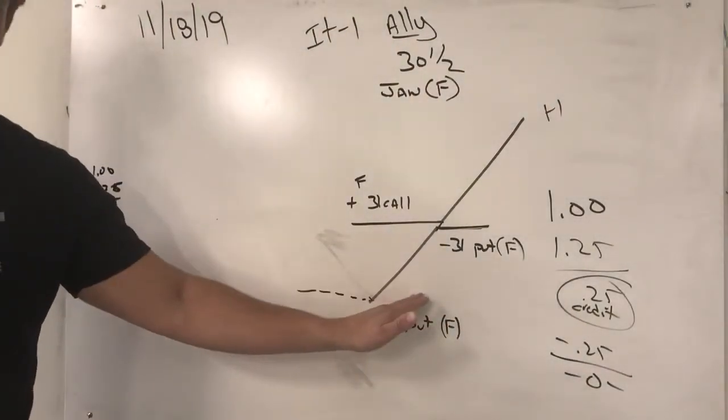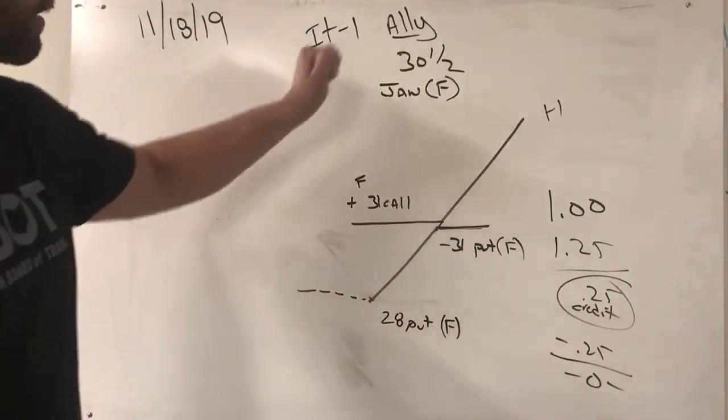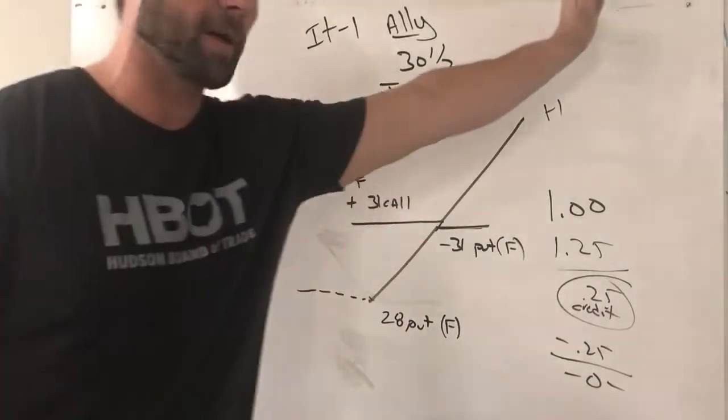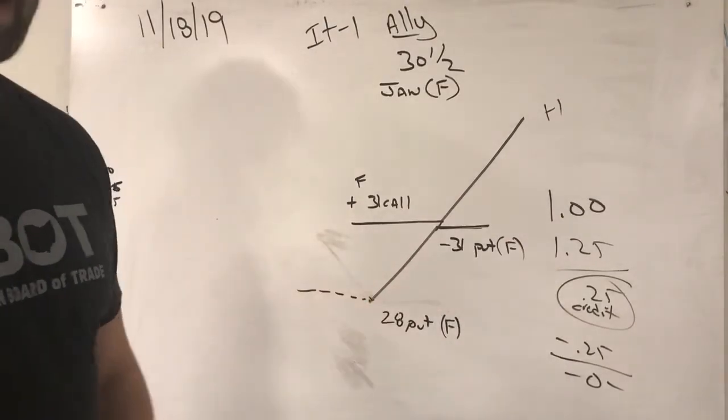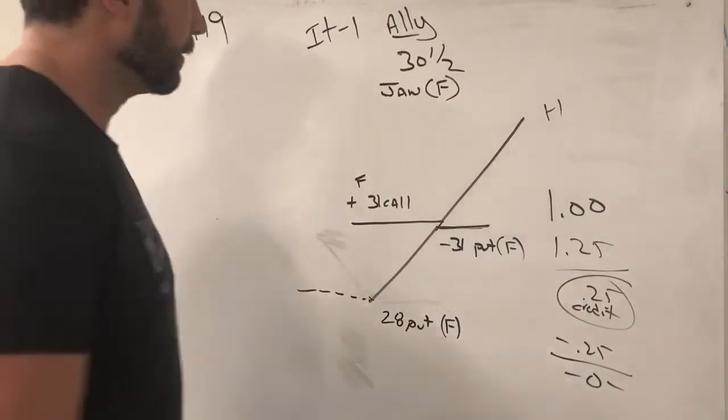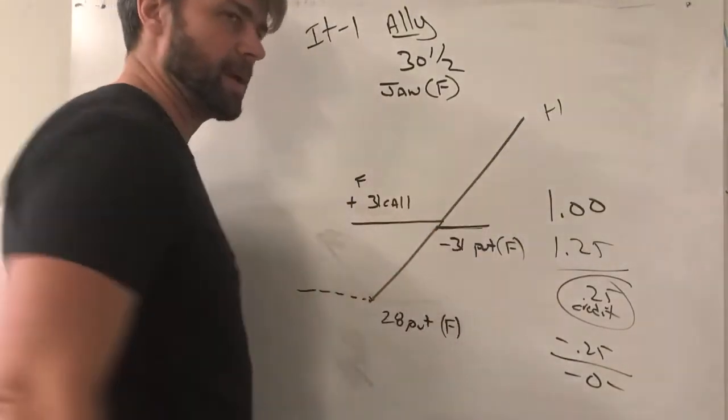I have three dollars of risk on the downside. That only happens if Ally, a stock that we think is going higher, sells off below twenty-eight. I'm gonna lose three dollars.